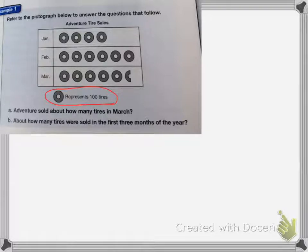We know that one full tire represents 100 tires. So if I want to know how many were in March, I have 1, 2, 3, 4, 5 whole tires. So that's going to be 5 times 100. So that's 500 tires.